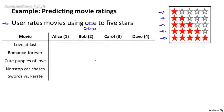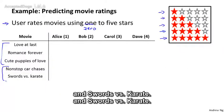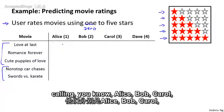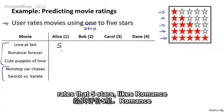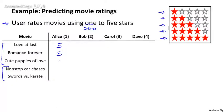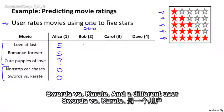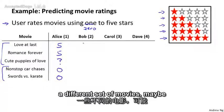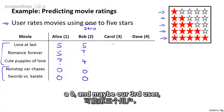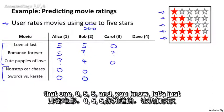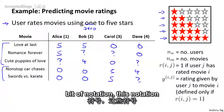So here I have five movies: Love at Last, Romance Forever, Cute Puppies of Love, Non-Stop Car Chasing, and Swords of Karate. And we have four users called Alice, Bob, Carol, and Dave — users one, two, three, and four. I'm going to use n_u to denote the number of users, so n_u equals four. And n_m to denote the number of movies, so n_m equals five.